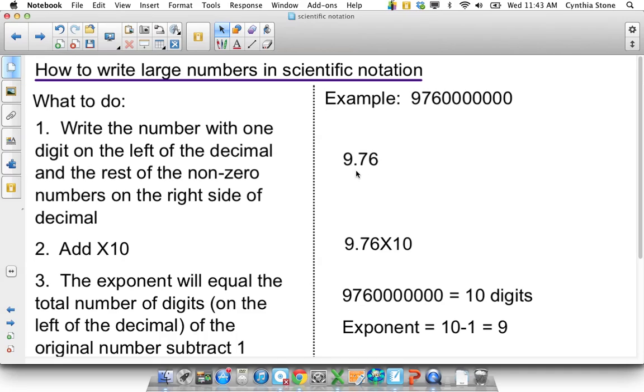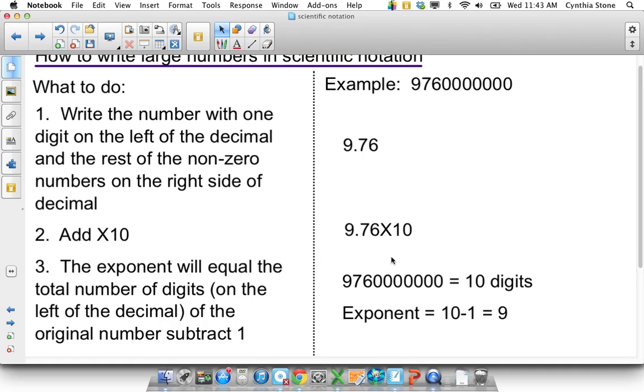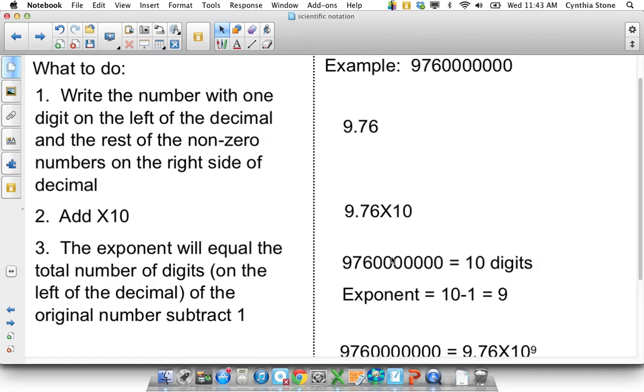So it's the first step. Write the number with one digit on the left and the rest of the non-zero digits on the right side of decimal. Okay? Theoretically, you could put all the zeros in, but that would defeat the purpose of doing scientific notation, I think. You add the times 10. And then the hard part is the exponent, but it's not hard.